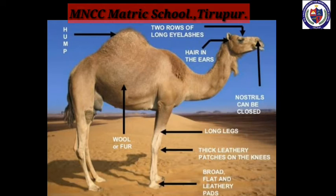Feature three: a camel's body is adapted to save water in the dry desert — it produces a small amount of urine, its tongue is dry, and it does not sweat. Since a camel loses very little water from its body, it can live for many days without drinking water. Feature four: a camel's hump has fat stored in it; in case of energy requirement, a camel can break down this stored fat for nourishment.